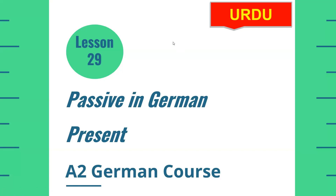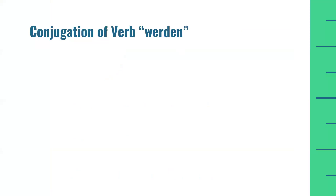Passive voice ek bahut bada topic hai German language mein. Aaj ke lesson ke andar hum present tense ke andar dekhenge ki hum German language mein passive voice ko kaise bana sakte hain. German language mein passive voice banane ke liye hume ek verb ki zaroorat hoti hai jo kya hai — 'werden'. Is werden ko kyunke hume har sentence mein passive ke liye use karna hota hai, is liye sabse pehle hum iske conjugation dekhte hain.